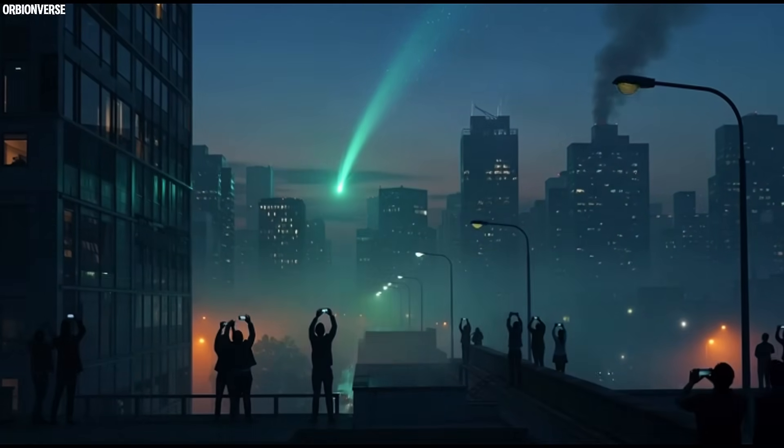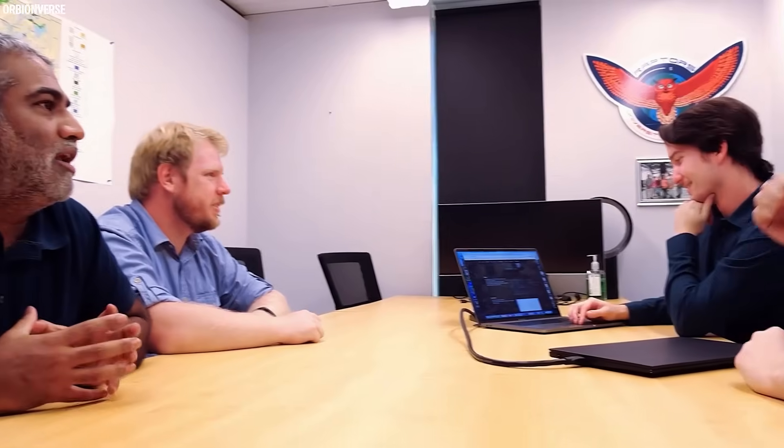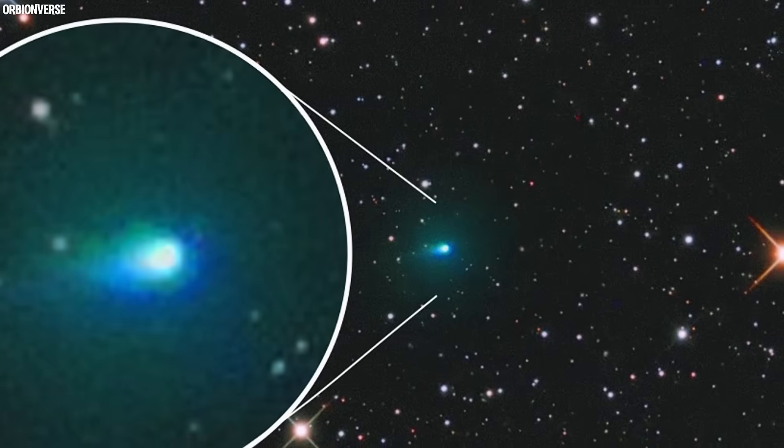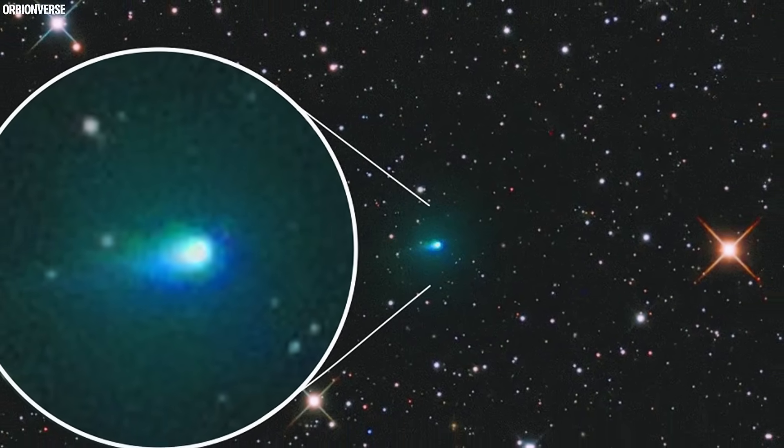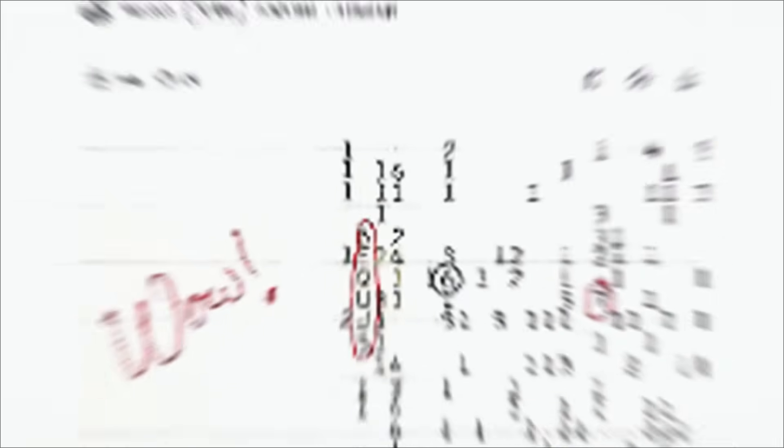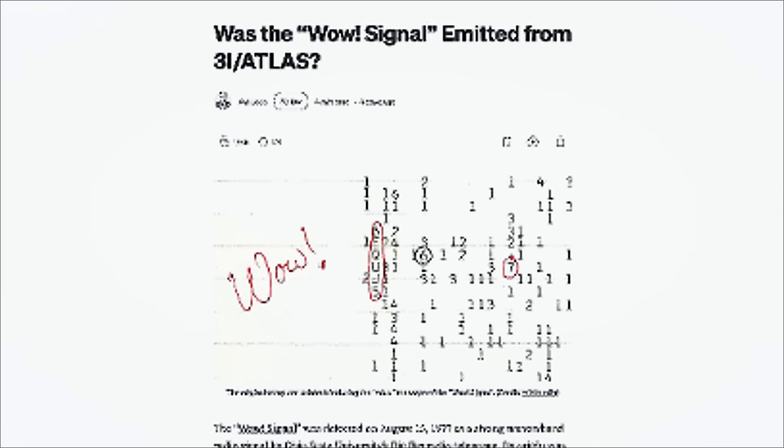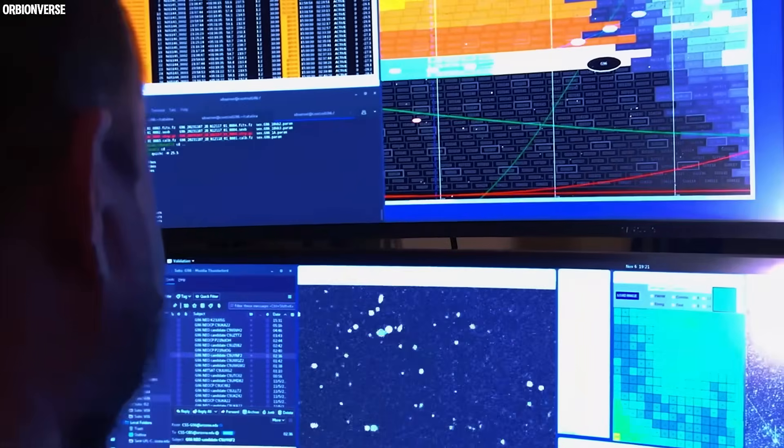For the first time in human history, we may not be observing the universe. We may be participating in it. So once again, the solar system holds its breath. Because somewhere between the sun and the stars, a green glowing traveler is teaching us something we were never ready to learn. Maybe it's a message. Maybe it's a test. Or maybe it's simply watching to see who notices. The next pulse is due any moment now.